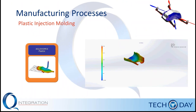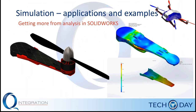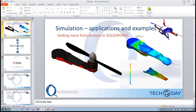Once we've done that, we're going to incorporate analysis for our manufacturing processes. Some of the components designed here are going to be manufactured using plastic injection molding, so SOLIDWORKS Plastics comes in handy to help figure out if these parts are going to be easy enough to manufacture. So without further ado, let's go ahead and take a look at the example.